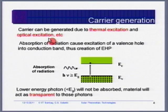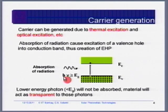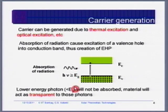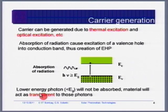Carriers can be generated because of thermal excitation and optical excitation. If the energy of the photon is equal to or greater than the band gap energy, then that photon can give its energy to an electron, which goes from a lower energy level to a higher energy level. If photon energy is less than the band gap energy, then the material is transparent. A typical example is glass — silicon oxide, a dielectric material with a very high band gap.